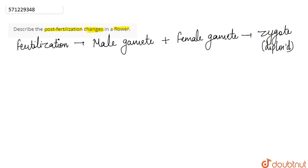So what happens once the fertilization is done? After fertilization, the zygote undergoes repetitive or repeated mitosis.